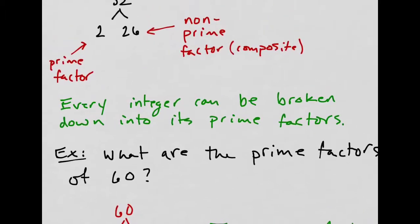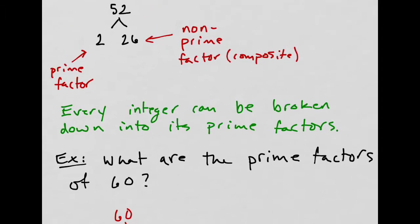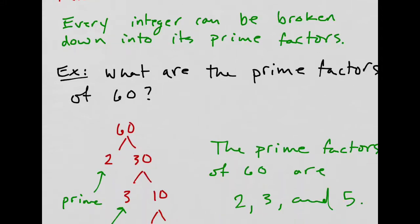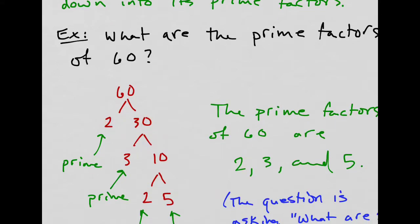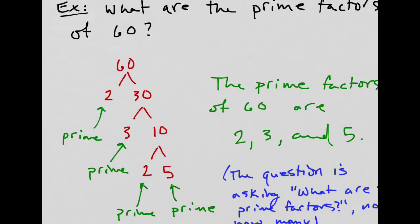What are the prime factors of 60? The first thing I want to do is break down 60 into its factors. So I do a factor tree. 2 times 30. 2 is prime. 30 is not. So I can keep breaking it down. 3 is prime. 10 is not. 2 and 5. Now they're both prime. All of these are prime. I cannot break them down anymore.